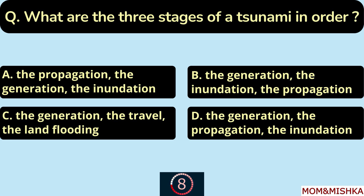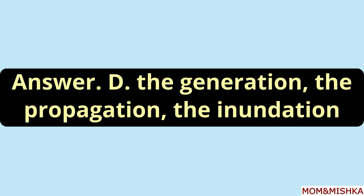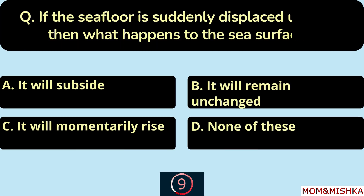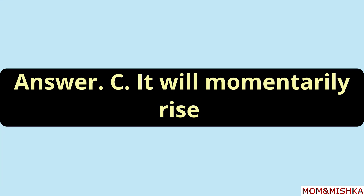What are the three stages of a tsunami in order? Option D: the generation, the propagation, and the inundation. If the sea floor is suddenly displaced upward, the sea surface will momentarily rise — option C.